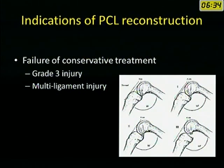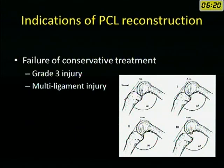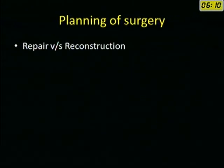The indication for PCL reconstruction is failure of conservative treatment, which occurs in grade 3 injury. In a grade 3 injury, the tibia goes posterior to the femur. Normally there is an anterior offset of the tibia compared to the femur, but if it goes posterior, it is grade 3. When there is a multi-ligament injury, you always do a surgical reconstruction.